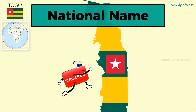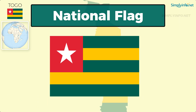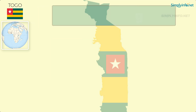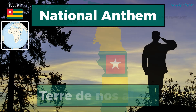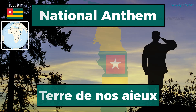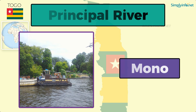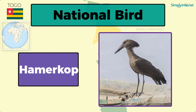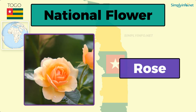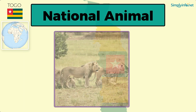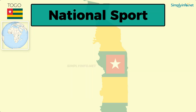National name: Republique Togolaise. National flag. National emblem. National anthem: Terre des Aïeux. Principal river: Mono. National bird: Hamerkop. National flower: Rose. National animal: African lion. National sport: Football.